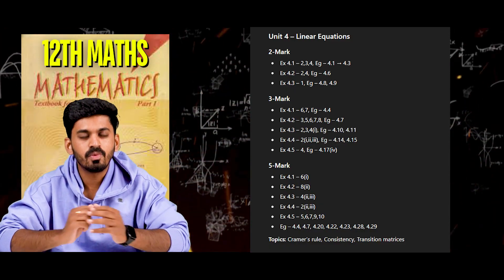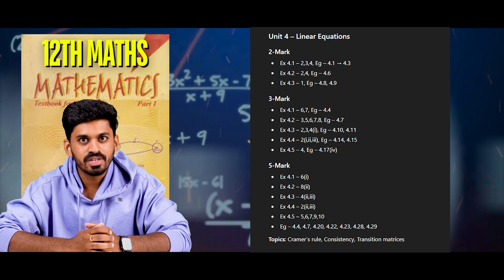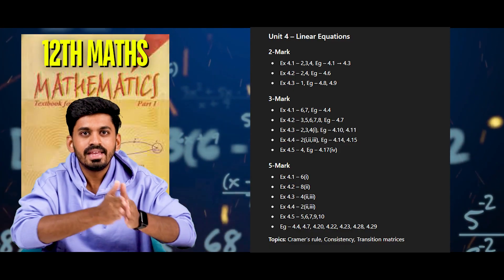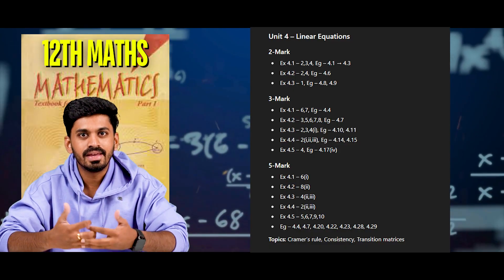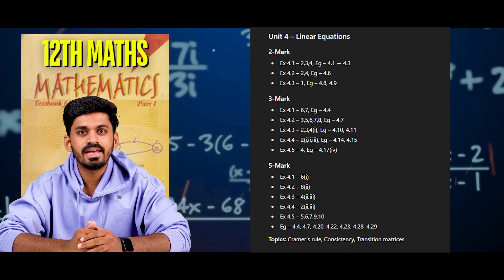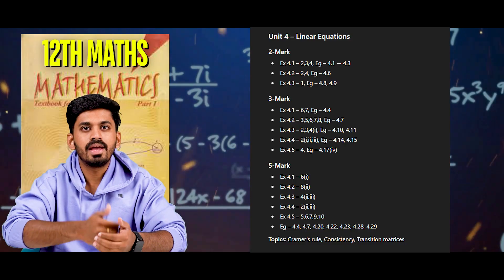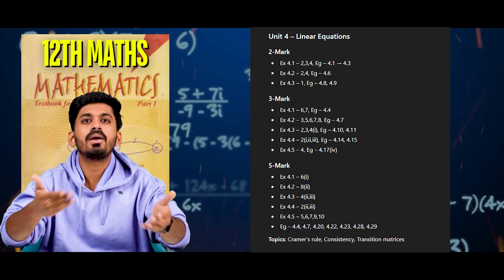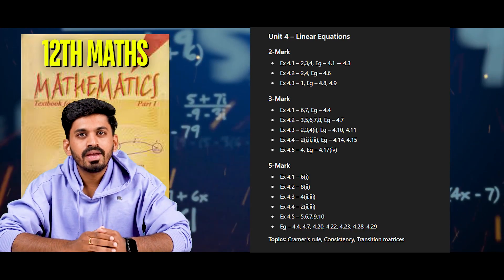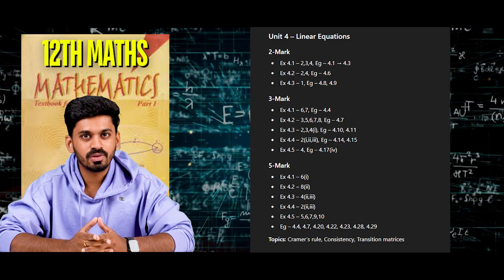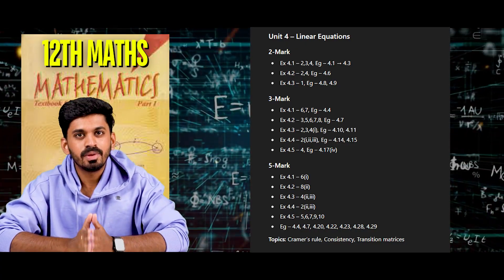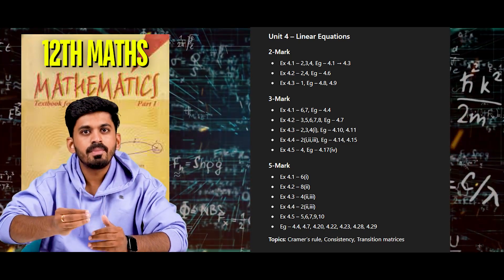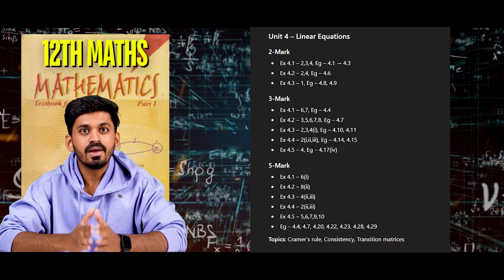Unit 4, 2-mark questions: Exercise 4.1 law 2, 3, 4. Examples 4.1, 4.2, 4.3. Exercise 4.2 law 3, 4. Example 4.6. Exercise 4.3 law 1. Examples 4.8 and 4.9. 3-mark questions: Exercise 4.1 law 6, 7. Example 4.4. Exercise 4.2 law 3, 5, 6, 7, 8. Example 4.7. Exercise 4.3 law 2, 3, 4. Law 1. Examples 4.10, 4.11. Exercise 4.4 law 2, law 1, 2, 3. Examples 4.14, 4.15. Exercise 4.5 law 4. Example 4.17 law 1, 4.